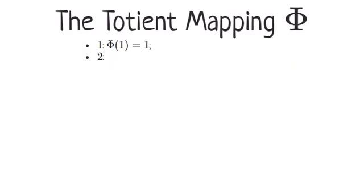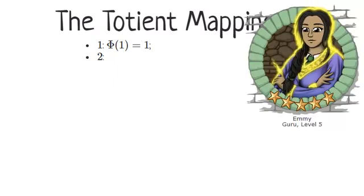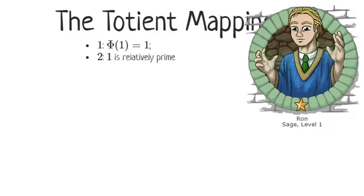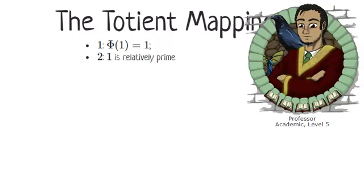So Phi of one equals one. Let's look at Phi of two. What natural numbers less than two are relatively prime to it? Obviously, one is relatively prime to two. That's the only number less than two. Yes, there is exactly one natural number less than two that is relatively prime to it, and so Phi of two equals one.